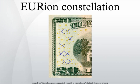The name Orion Constellation was coined by Marcus Kuhn, who uncovered the pattern in early 2002 while experimenting with a Xerox color photocopier that refused to reproduce banknotes. The word is a portmanteau of EUR, the Euro's ISO 4217 designation, and Orion, a constellation of similar shape.